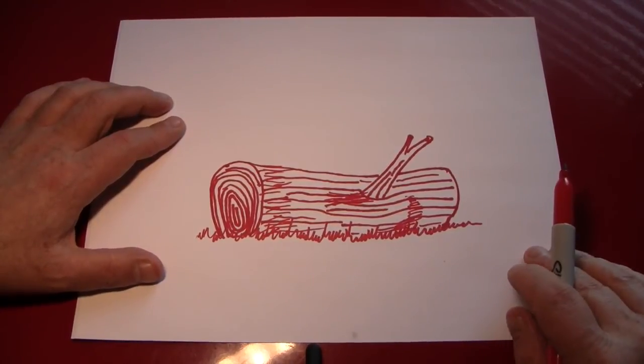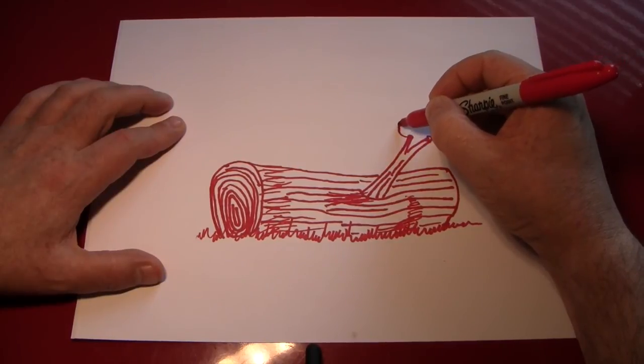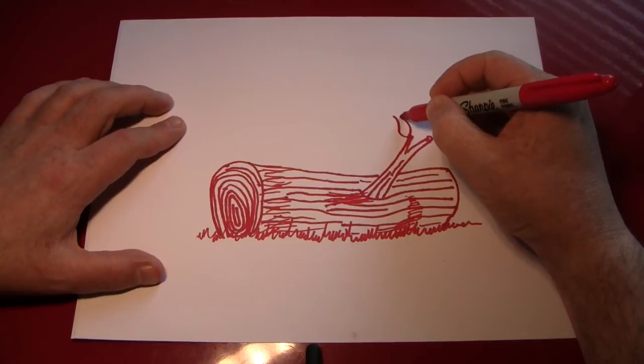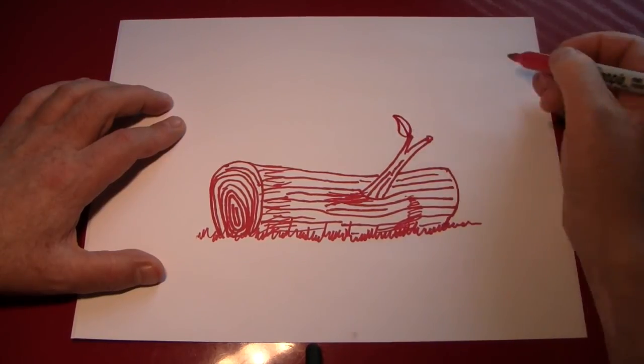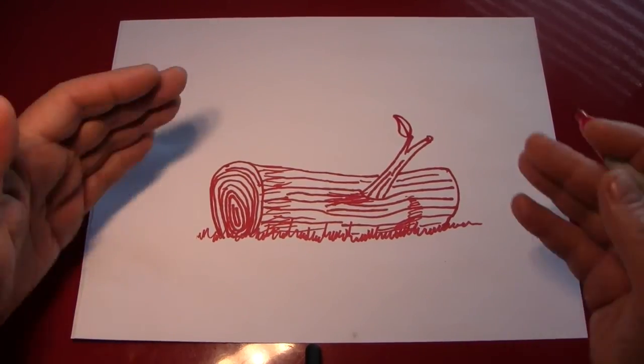And we've drawn a log. Maybe use our skills to put a little leaf at the end here. That's nice. A little S. And a curved line to meet that S. A line down the middle. It's a leaf. So like I said, we've drawn a log.